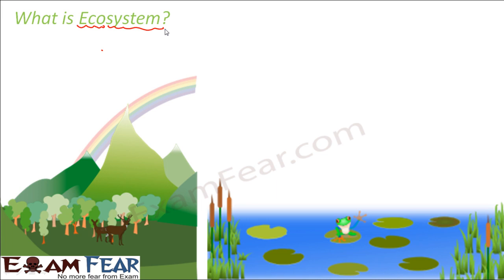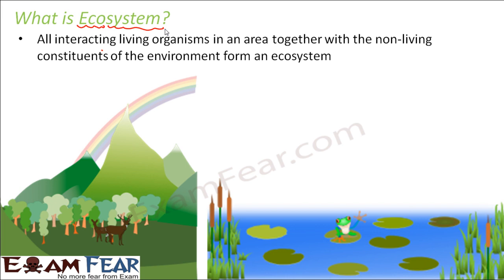In ecosystem, we talk about the interaction between living and non-living organisms. What is the meaning of 'eco'? Ecology is the branch of science which deals with the study of interaction between living and non-living organisms. The word 'eco' is derived from and related to environment and atmosphere. In that entire environment, you have both living and non-living organisms. So an ecosystem consists of all interacting living organisms in an area together with the non-living constituents of the environment — both are equally crucial for the sustenance of life.